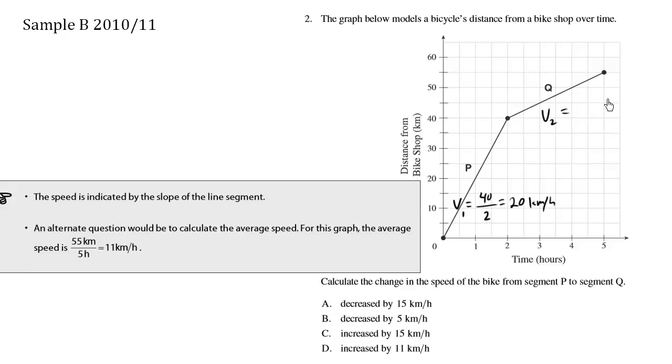The velocity here is rise, which is 15 (3 squares would be 15), over the run, which is from 2 hours to 5 hours, so over 3. This velocity is 5 kilometers per hour.